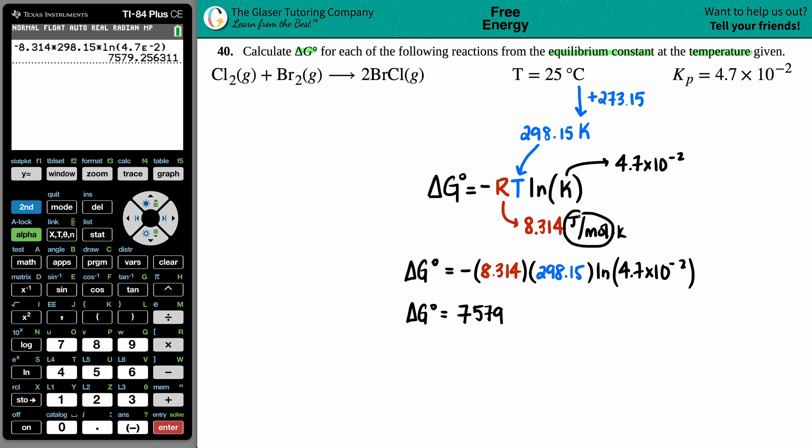And joules per mole is the unit because those weren't canceled out. Now this is a big number, so generally if you're solving for a ΔG, it's going to be in kilojoules per mole. So all we have to do is just convert the joules into kilojoules. All you got to do is just divide by a thousand.